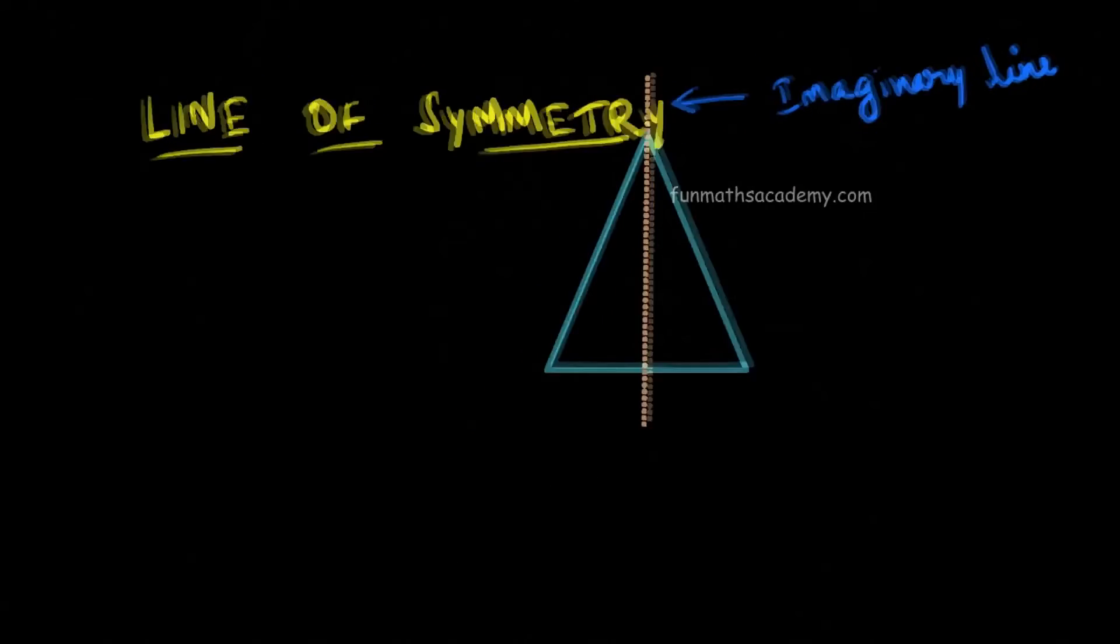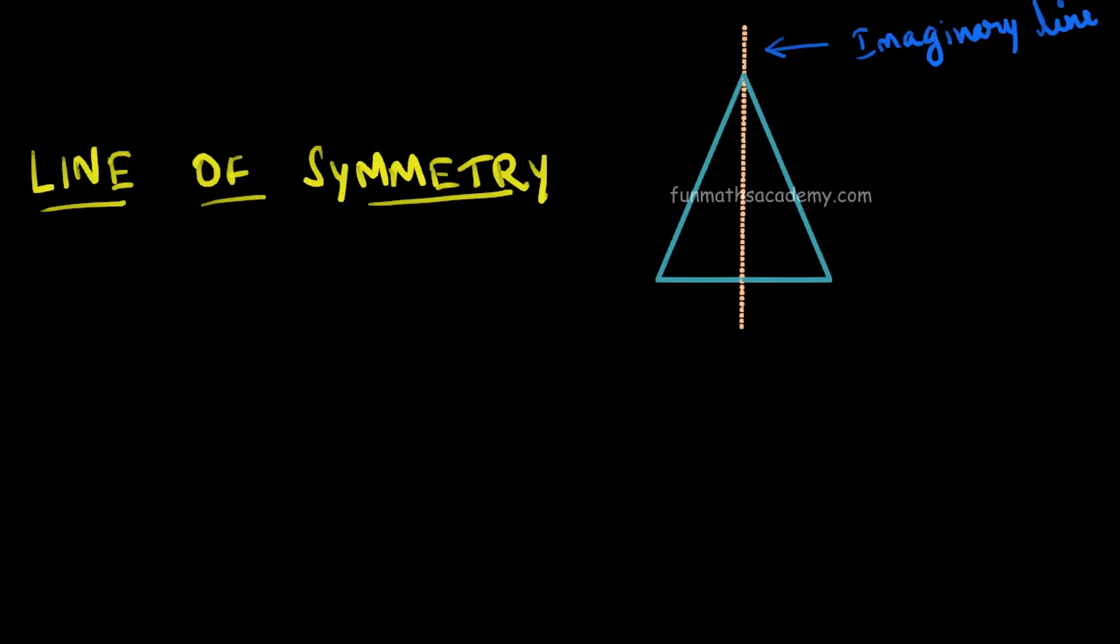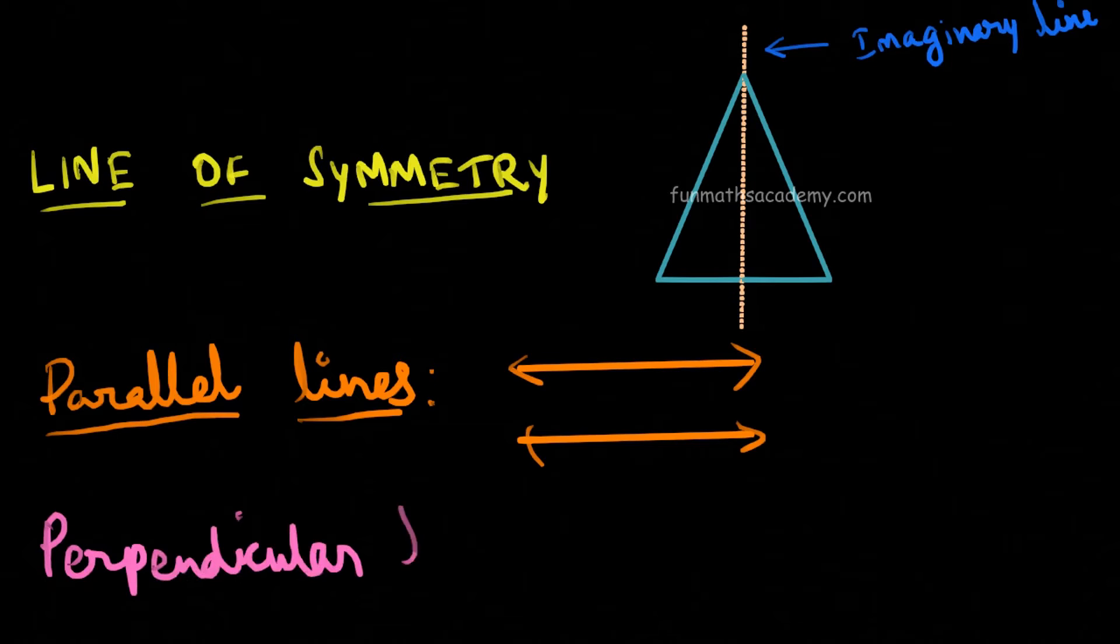You might already know about parallel lines and perpendicular lines. Parallel lines are equidistant. Perpendicular lines will be at right angles to each other. You might even think, why am I talking about lines of symmetry, but you will understand why when you start seeing some examples.